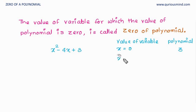Let's say x is equal to 1. Value of variable is 1. Then 1 square is 1 minus 4 into 1 is minus 4. 1 minus 4 is minus 3. Minus 3 plus 3 is zero.